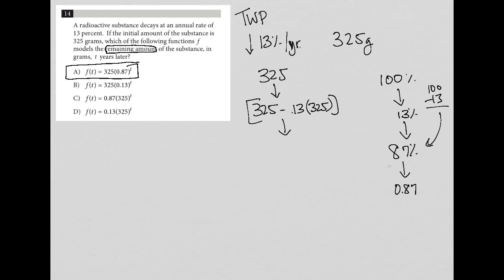The only other one that actually has the 0.87 is choice C. But as you can see there, I'd be raising my initial amount to the T power, which is definitely not what I want to do. This value here is going to get larger and larger over time, whereas this value here is going to get smaller and smaller over time.